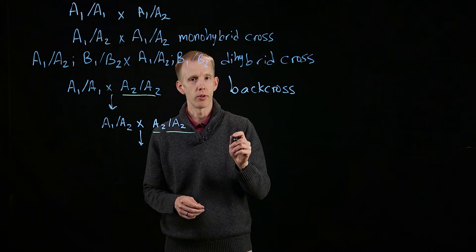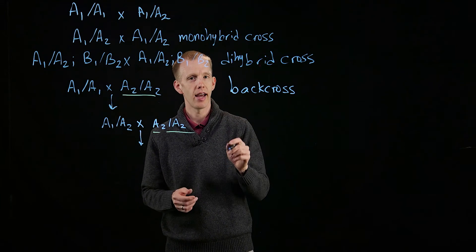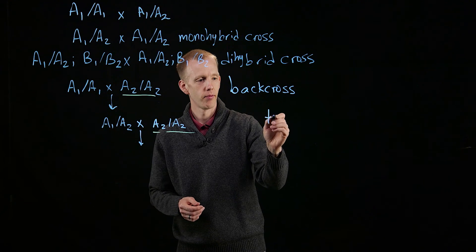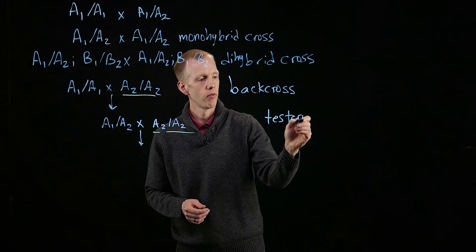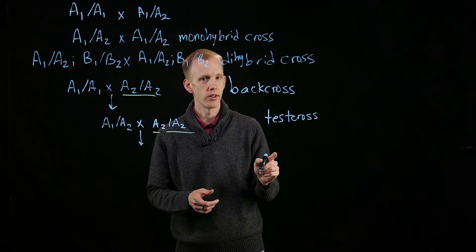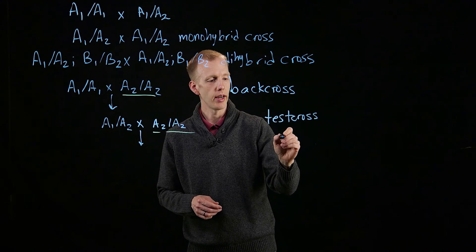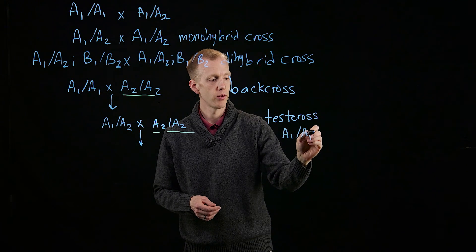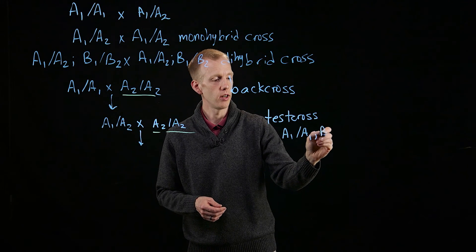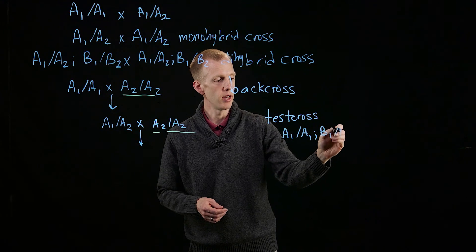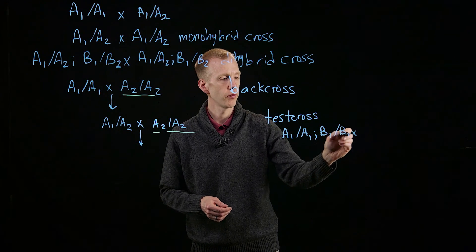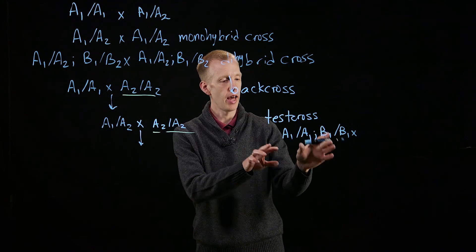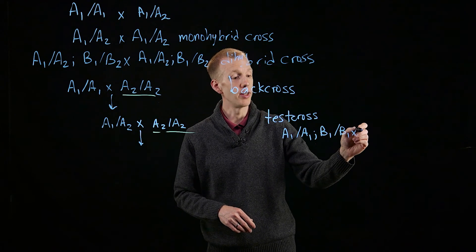One final cross type that's important to know about is a testcross. A testcross is defined as an individual that's homozygous for two or more alleles. So we'll say gene A and gene B on separate chromosomes. The testcross is defined as that genotype crossed to a dihybrid.